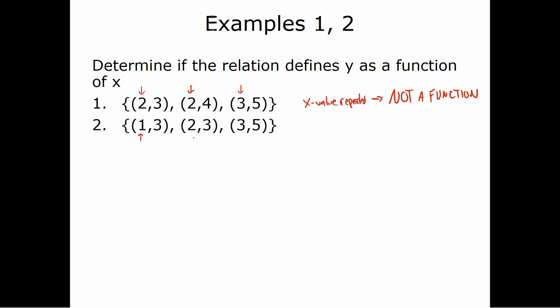In the second relation, the x values are 1, 2, 3 — no x value is repeated, so this is a function. It's easy to see when we have relations defined as sets of ordered pairs.